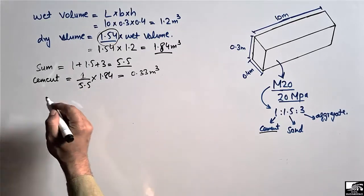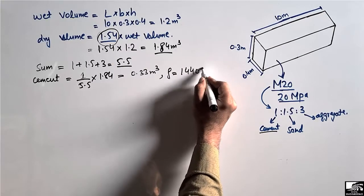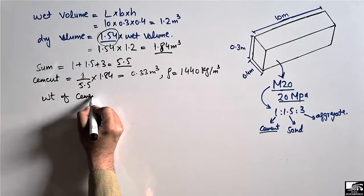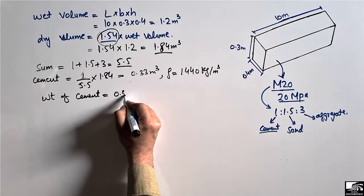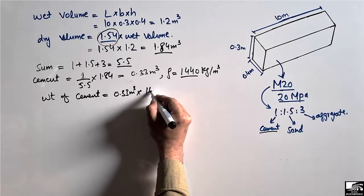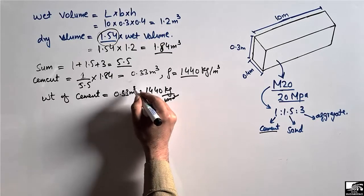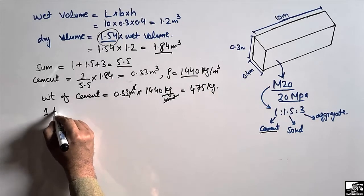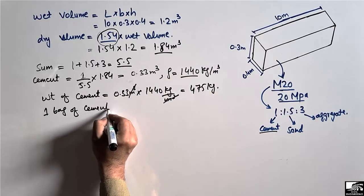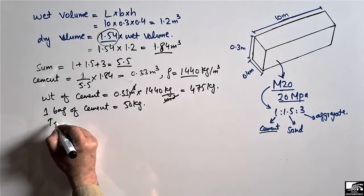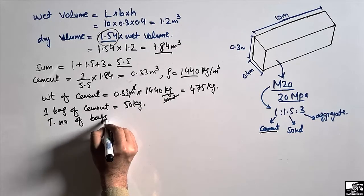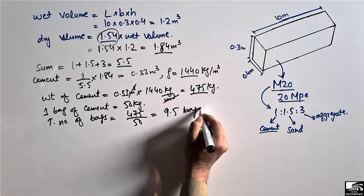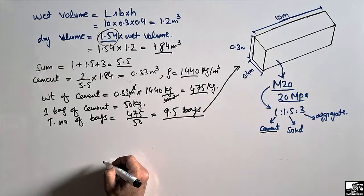To find the number of cement bags, we use the density of cement, which is 1440 kg/m³. The weight of cement equals 0.33 m³ multiplied by 1440, giving 475 kilograms. Since one bag of cement is 50 kilograms, the total number of bags equals 475 divided by 50, which is approximately 9.5 bags of cement.